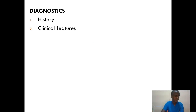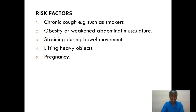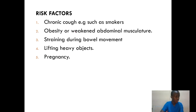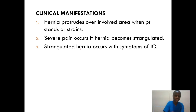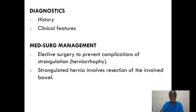How can we arrive at a diagnosis of hernia? First, we take history. Then we look at clinical features, and don't forget about the risk factors we've discussed — pregnancy, heavy lifting, straining during bowel movements, obesity, and chronic cough such as in smokers. All these are covered under history taking. When we observe clinical features such as the hernia protruding, that also helps us arrive at a proper diagnosis.